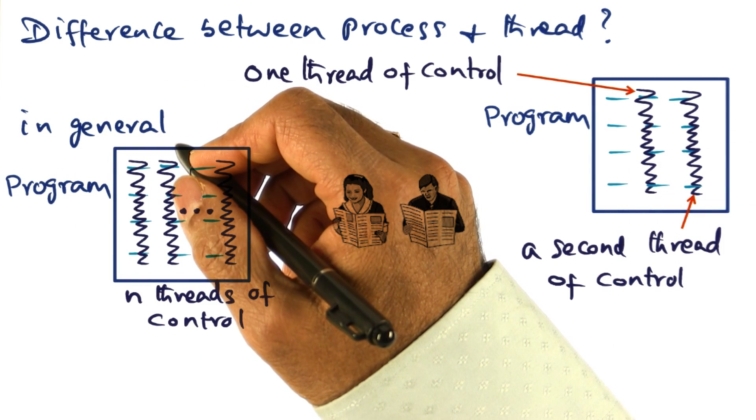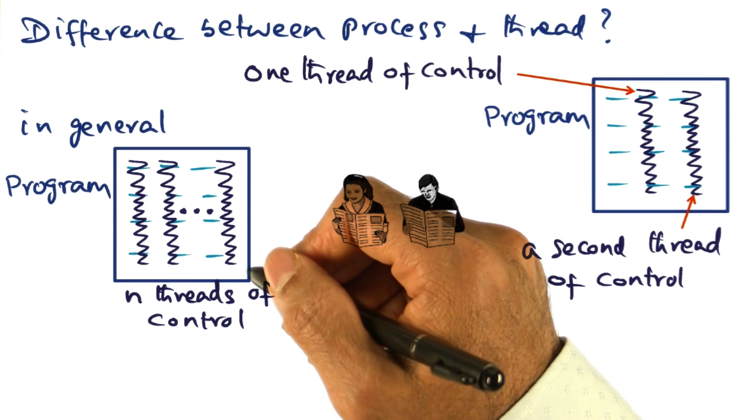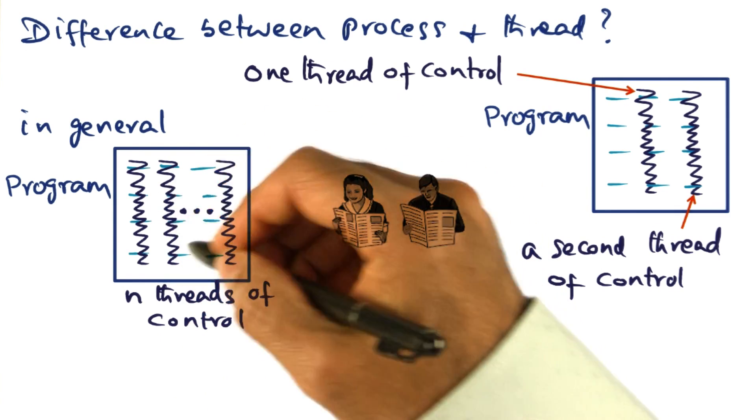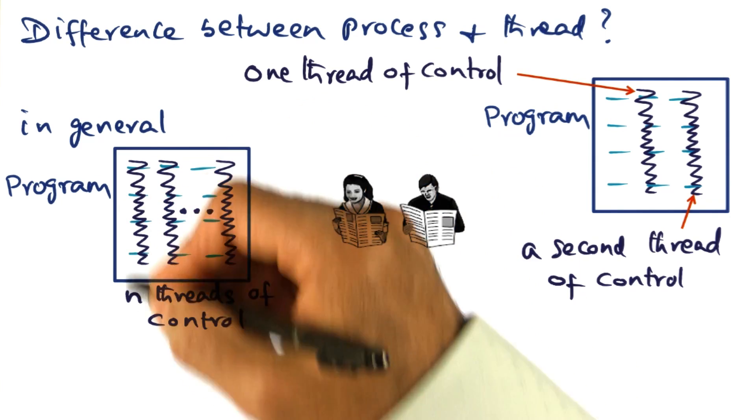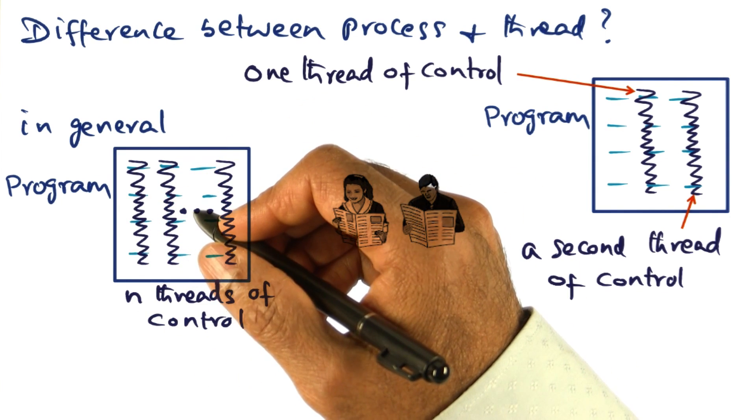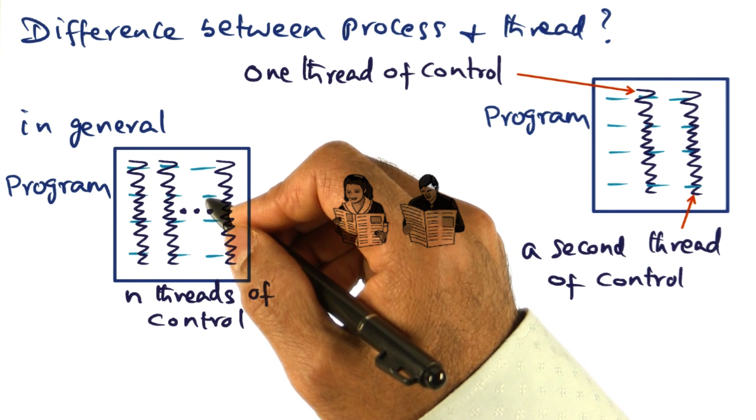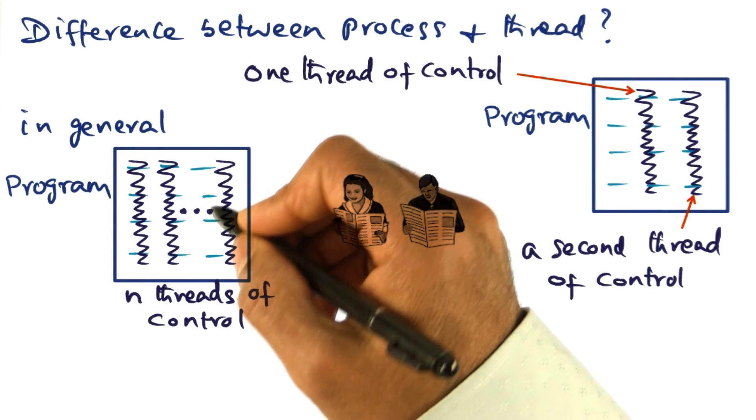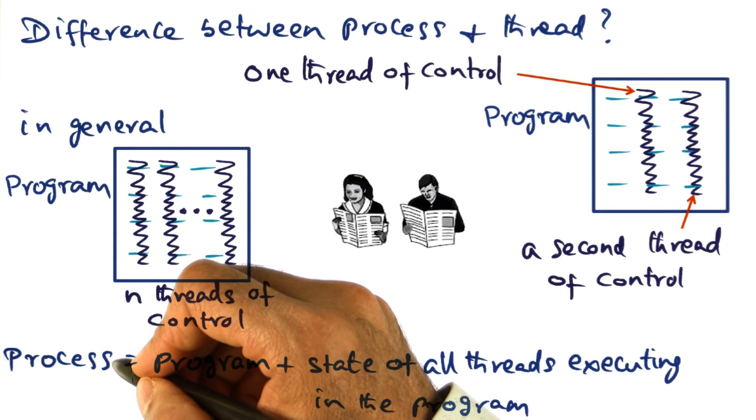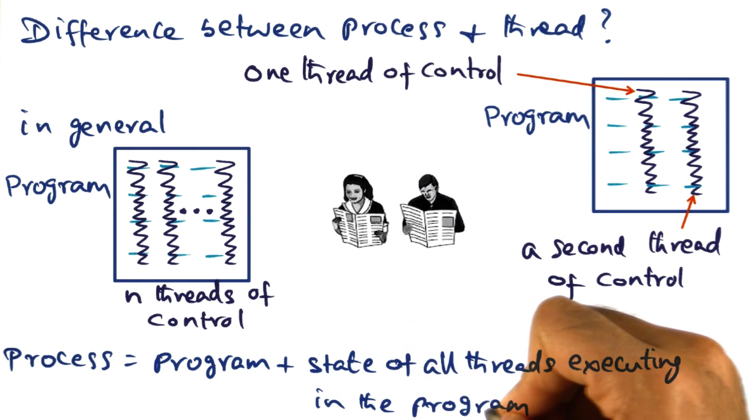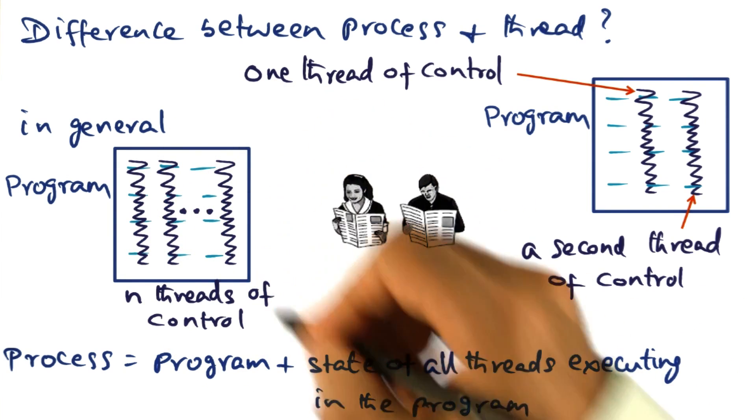Now, generalizing it, a program can have several threads of control, and each thread of control may be coursing through different sections of the program, and they could also be competing for the same section of the program, as well as the same data structures in order to manipulate. Thus, a process is a program plus the state of all the threads that are executing within the program.